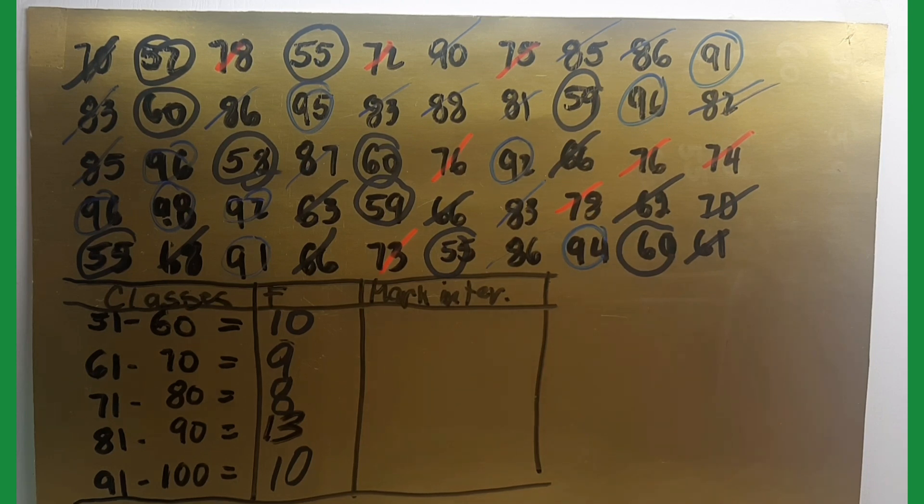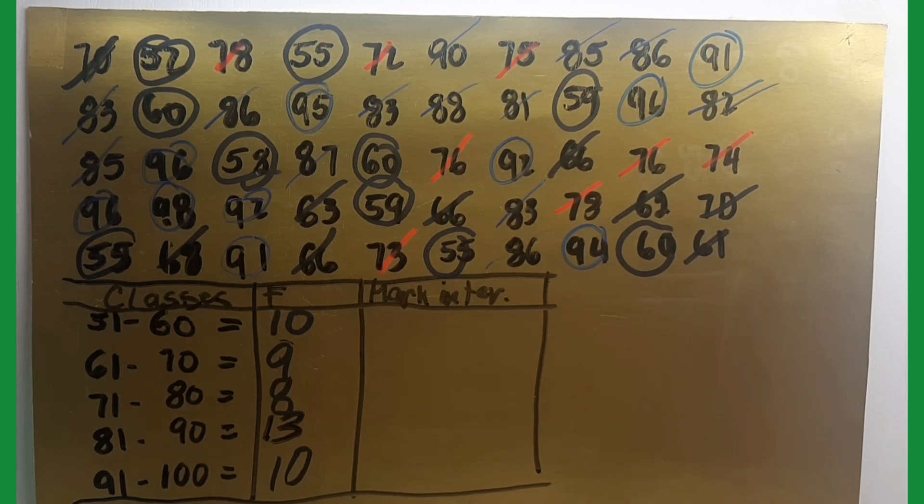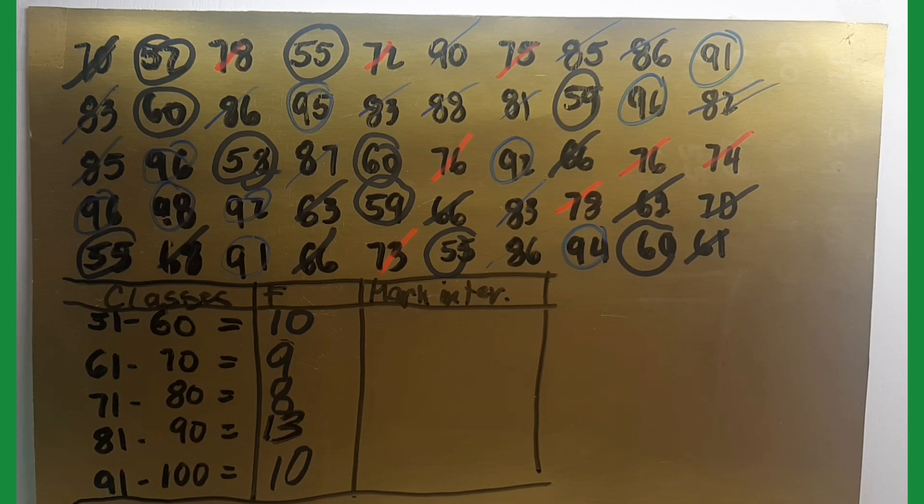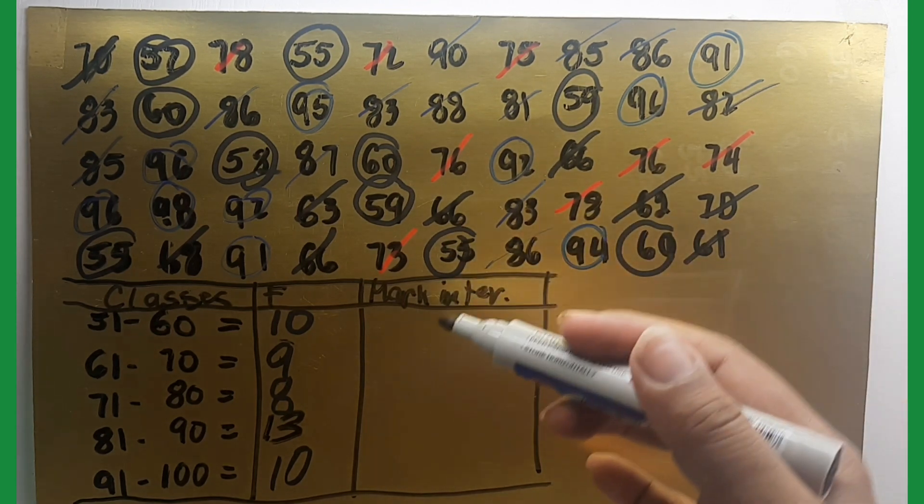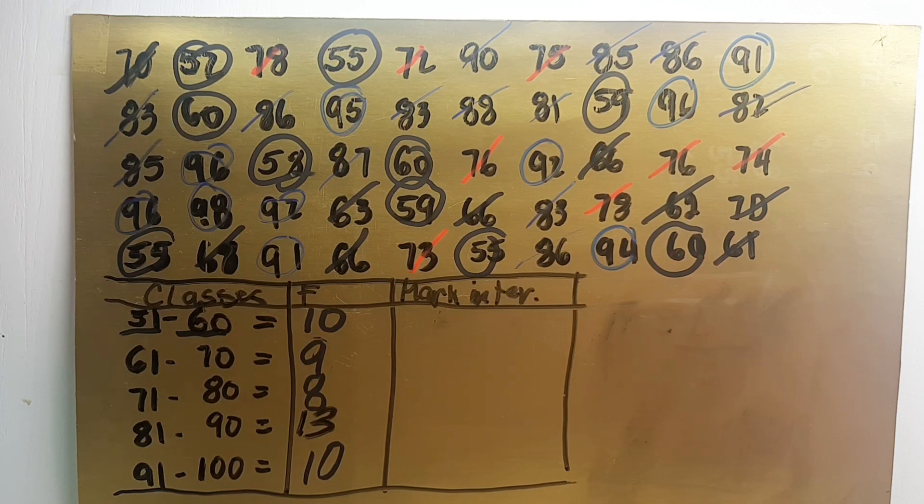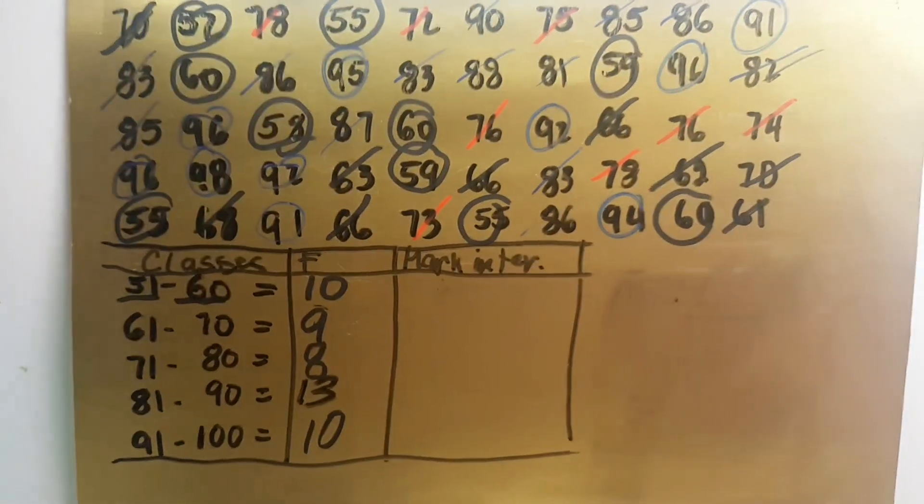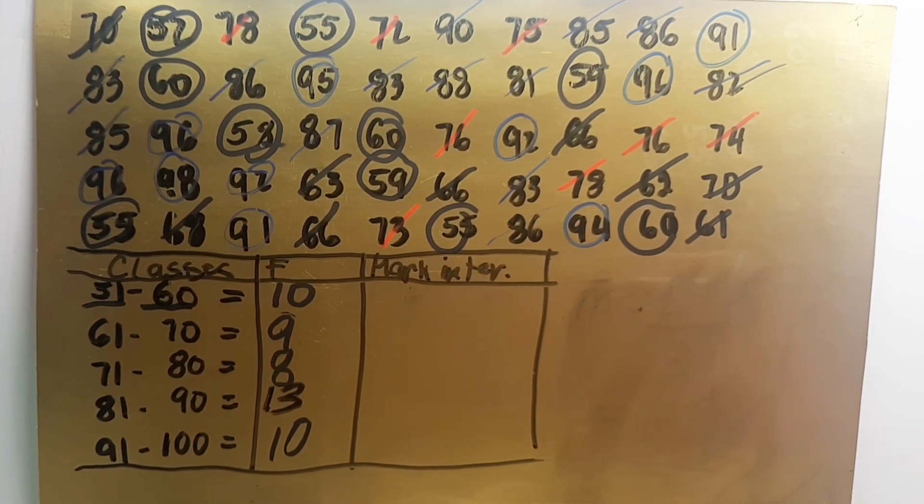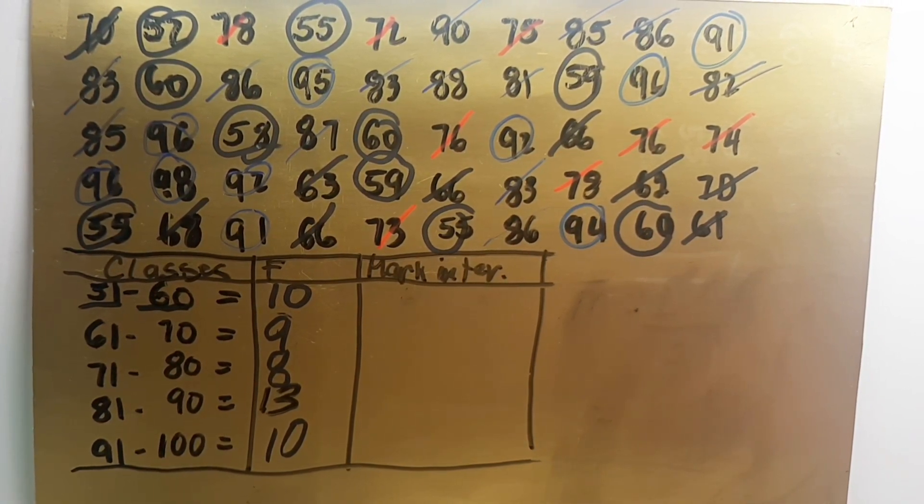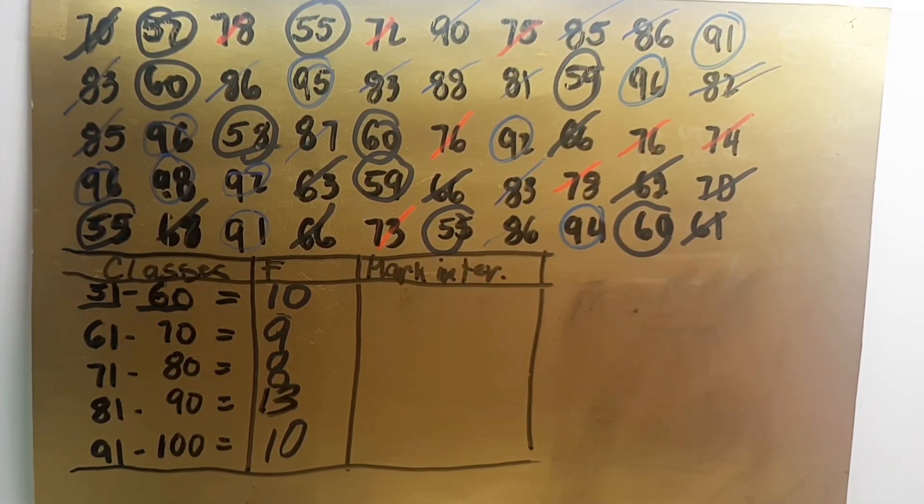So here is the outcome or the frequency of each class. Now we are going to find the midpoint or how to compute the mid intervals of each class. Because we are going to graph a polygon graph, which is a frequency polygon. It's a line graph of class frequency plotted against midpoint. So this is how to get the midpoint of the class intervals.